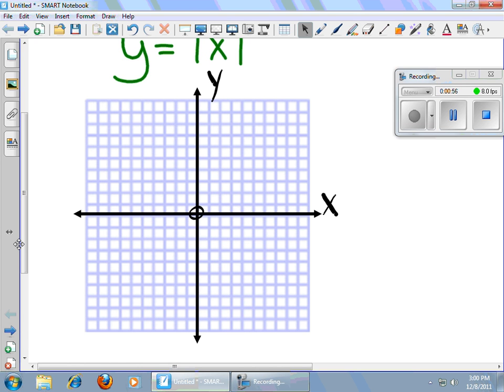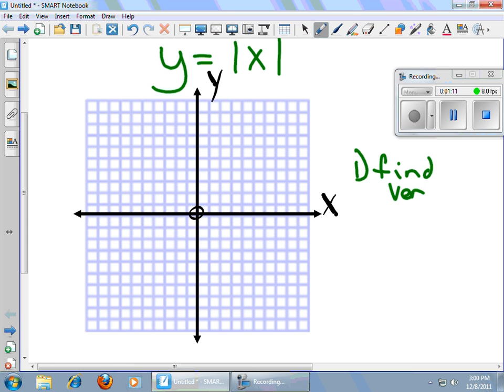Everything works off of this equation: Y equals the absolute value of X. The first thing I do is I find my vertex. The vertex is like the corner, the bottom of the V, the place where the lines kind of change direction. I know that there's nothing being added to this equation, and there's nothing being added inside the absolute value. So my vertex occurs at 0, 0, and I will put my vertex there.